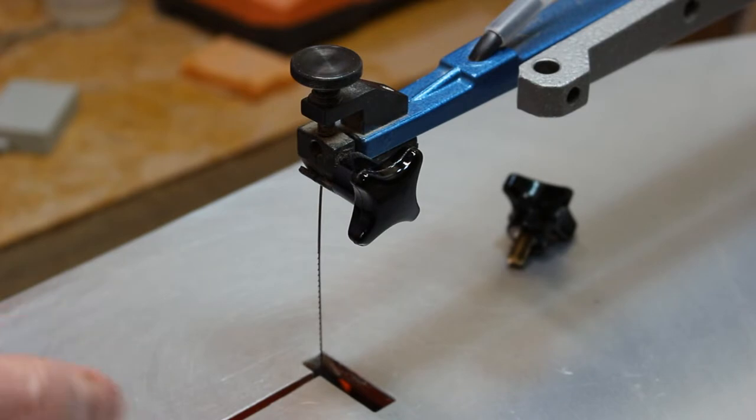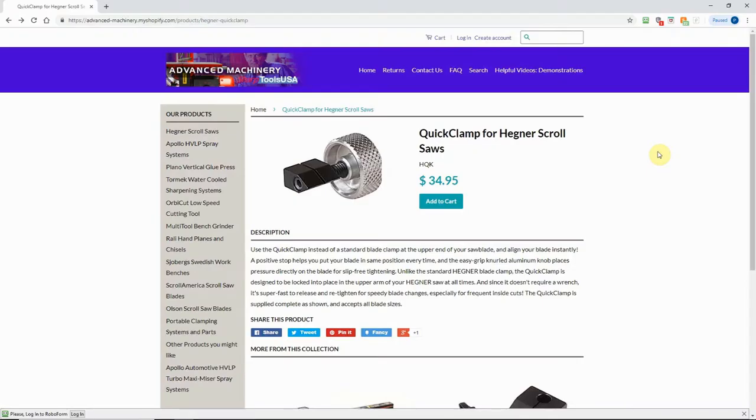So I'm going to show you what that solution is. On Hegner's website, they do sell what's called a quick clamp. That has a little bit of a different type of upper blade clamp and it also has a bigger knob to grab onto so it makes it easier to loosen and tighten that upper blade clamp.